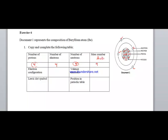The electron configuration of Beryllium (atomic number 4) is K2 L2. The number of valence electrons is the number of electrons in the outer energy level L, so we have 2 valence electrons.